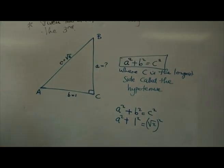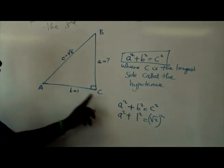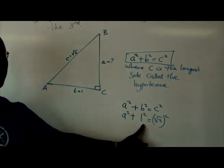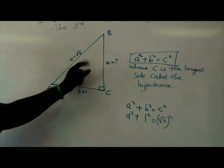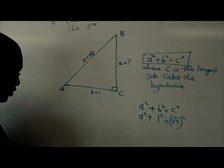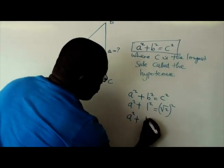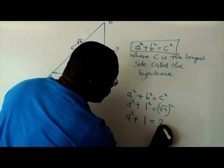So what I've simply done is I've substituted what I've been given. I know b is equal to 1, so I put where there's b, I substitute it with 1. And I know c is equal to √2, so I substitute it with √2. So this is going to be a² + 1 is equal to 2.